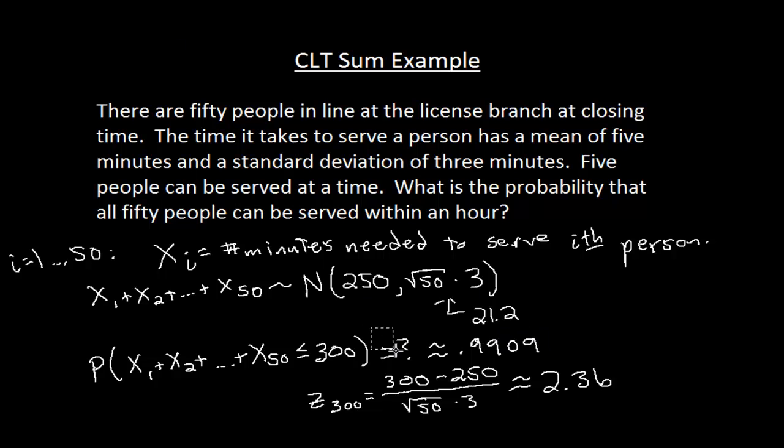So our probability is about .9909. That's it. That's our probability. The new thing here is coming up with this normal distribution. Even if we don't completely know the distribution for those random variables, we need to know the mean and the standard deviation, but we don't need to know the type of distribution. As long as there's a bunch of them and are identically distributed and independent, we can say that the sum of those is approximately normal. Here we see that there's about a 99% probability of being able to serve everyone before an hour elapses.